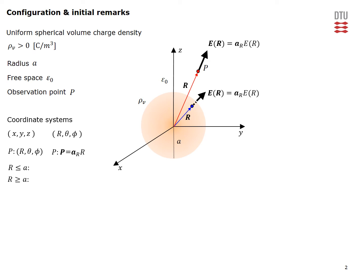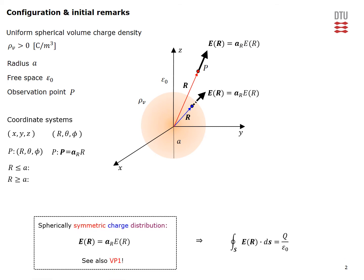At those points the field will have a radial component both inside and outside, and the magnitude in both cases will only depend on the distance to the observation point. Because of the spherical symmetry of our charge distribution this must necessarily be the case, as demonstrated in detail in video problem 1 for a point charge. This also means that we can use Gauss's law to determine the electric field.